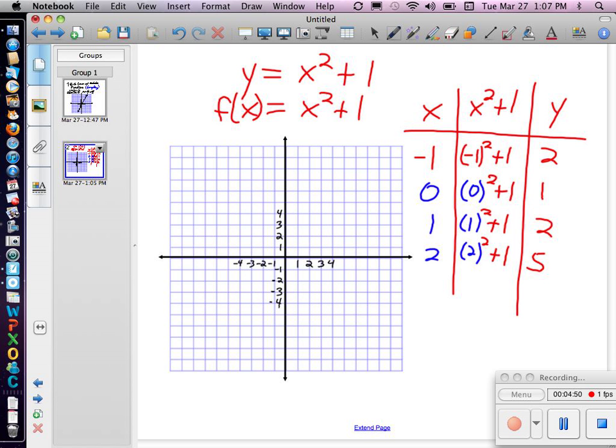Okay, and so now we graph them. Notice we have the x, in this case, would be negative 1, and the corresponding y value would be 2. So that would form our coordinate pair. Remember, our x, y coordinate pair. So negative 1, 2 would be here. And then 0, 1 would be here. And 1, 2 would be here. And 2, 5 would be up here.